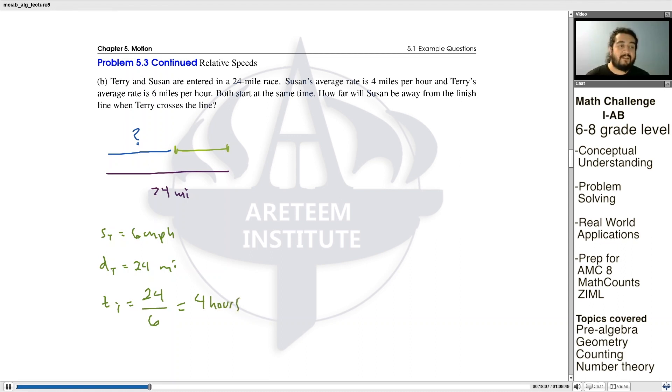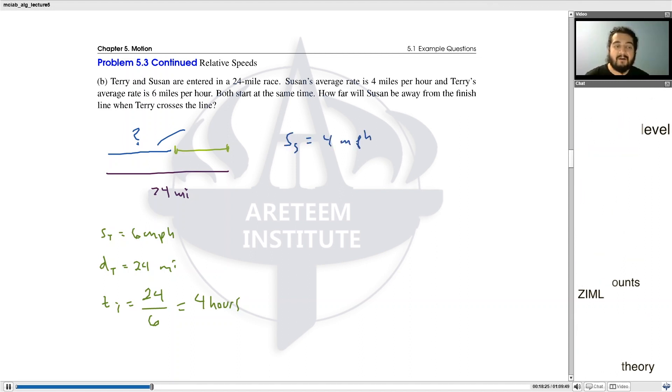So if they're running at the same time, they start at the same time, then Susan will travel this much distance in the same 4 hours. But she travels at a rate of 4 miles per hour. So the speed of Susan is 4 miles per hour. And we're going to figure out how much distance she traveled in 4 hours.